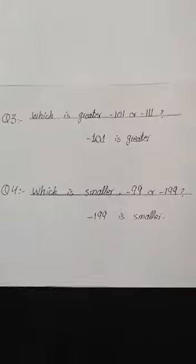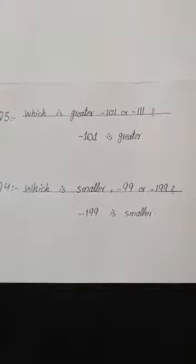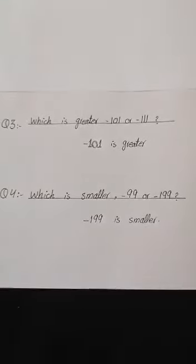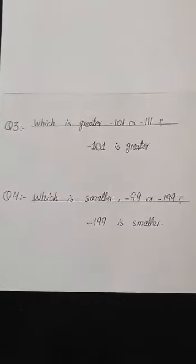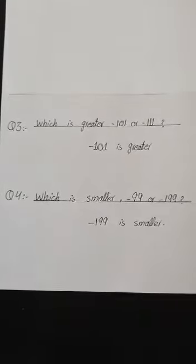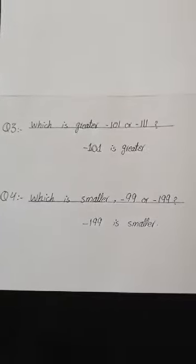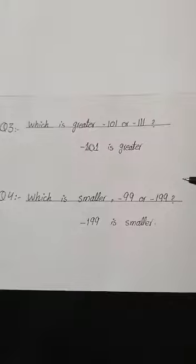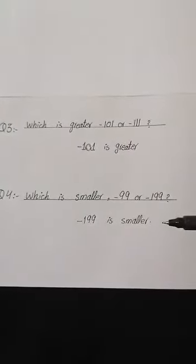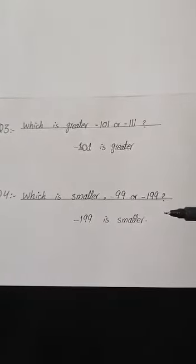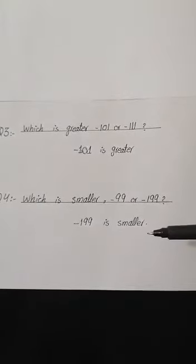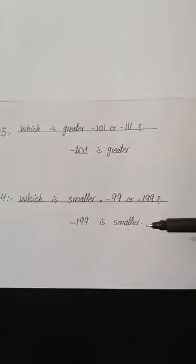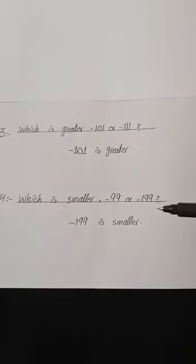Now move on to question number 3: which is greater, minus 101 or minus 111? It's very easy to give the answer. 101 is greater because both values have the negative sign, and when the negative sign exists, the smaller-looking value is actually the greater one. By look, 101 is smaller, but in actual minus 101 is greater than minus 111 due to the minus sign. In the next one, which is smaller — minus 99 or minus 199? Minus 199 is smaller because both values have the negative sign, so due to the negative sign, 199 is the smaller one.